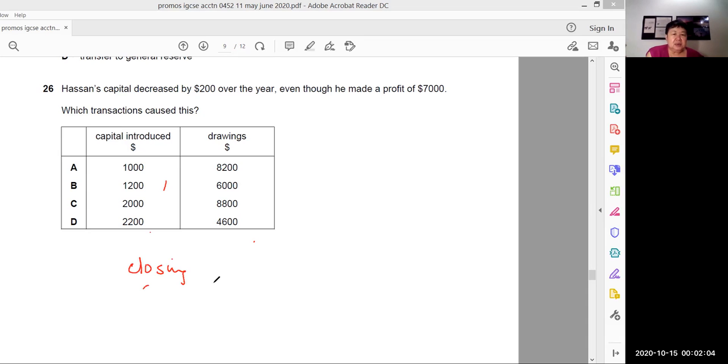So remember this in the famous equation. Closing capital equals opening capital, plus profit for the year. Remember this equation. Plus additional share capital if you have, in this case you don't have, minus drawings. So therefore, let's say the closing capital, capital decreased by 200. Let's say the capital is X. Let's say the opening capital is X. So the closing capital will be X minus 200. So I'm going to use the closing capital here, X minus 200. The opening capital, I shall refer it to X. The profit for the year made a profit of 7,000.